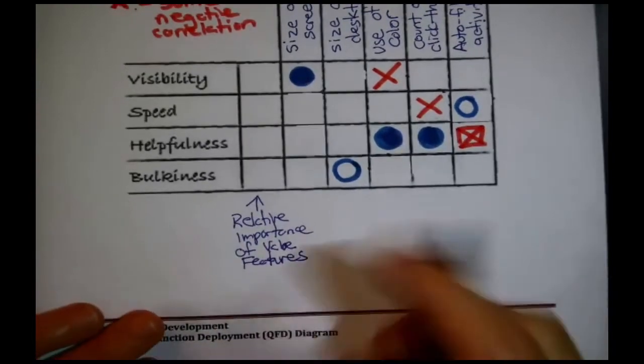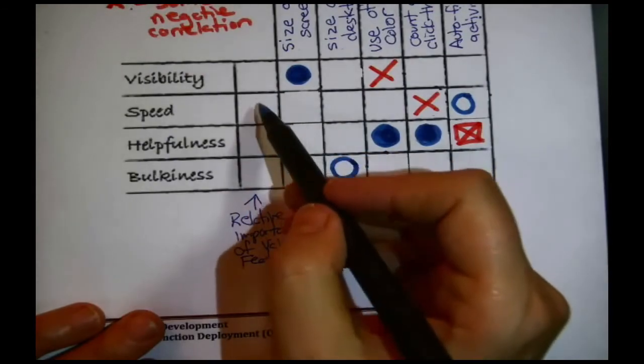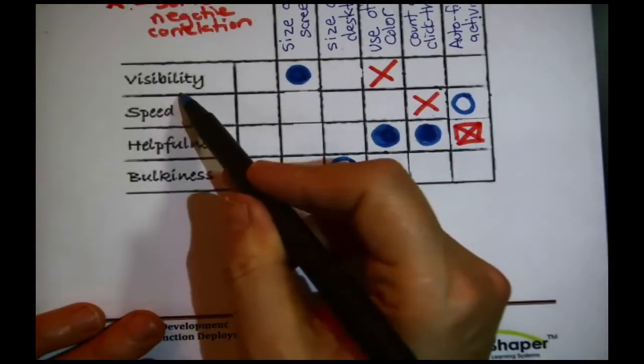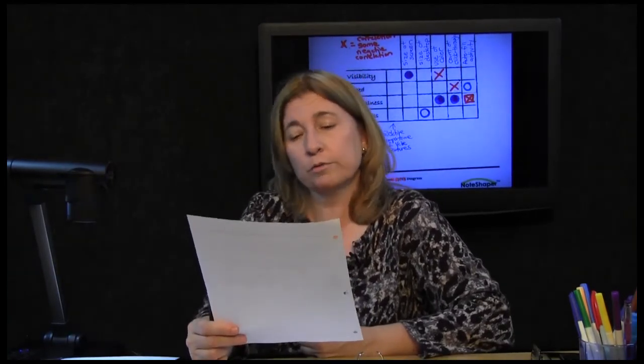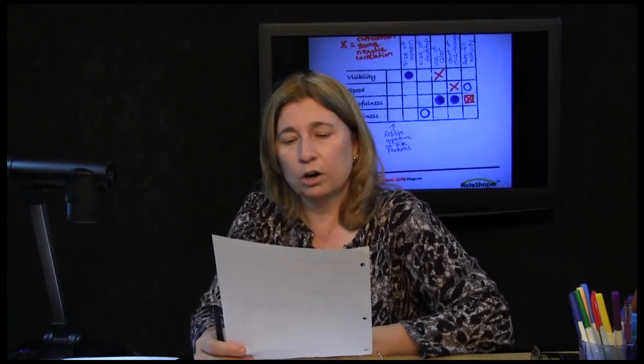Okay, relative importance of value features, we would want some way of expressing whether one of these things like visibility is more important than others. A typical way of doing that is having a hundred point scale and dividing up the hundred points among the value features, right, the ones that are more important get more points. Except in this particular scenario, it actually said earlier customer focus groups didn't reveal any preferences among visibility, speed, helpfulness, or bulkiness. They said those four things are important, but they didn't reveal that any one of them was any more important than the other.